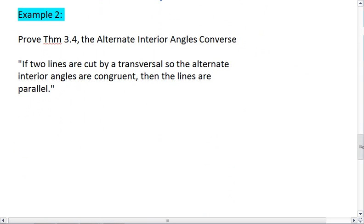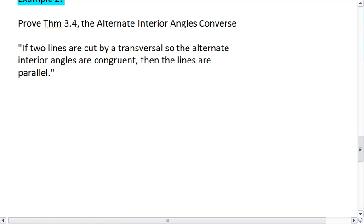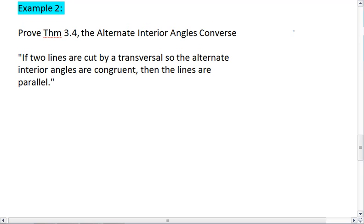Let's look at a different kind of example. In example 2, we want to prove theorem 3.4, and that's the alternate interior angle converse. So we want to prove that if we have two lines cut by a transversal such that alternate interior angles are congruent, then the lines are parallel.